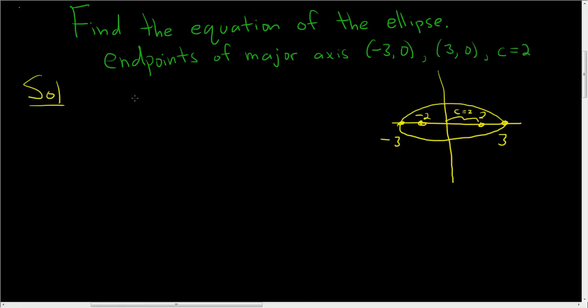Okay, so we're going to use the formula for an ellipse with major axis horizontal.